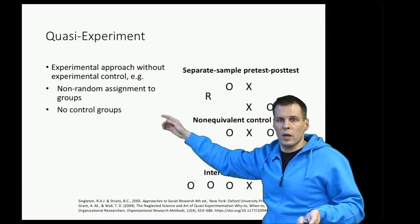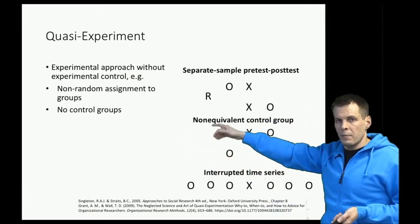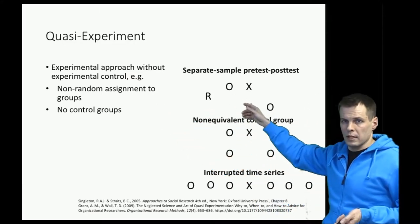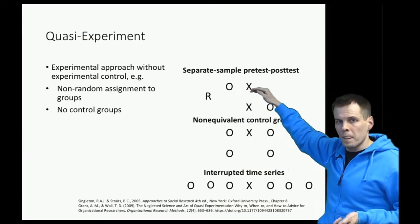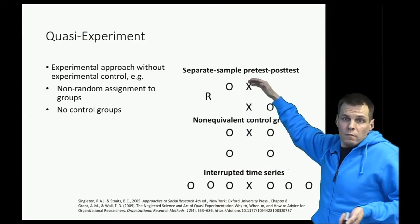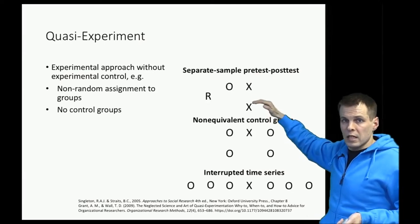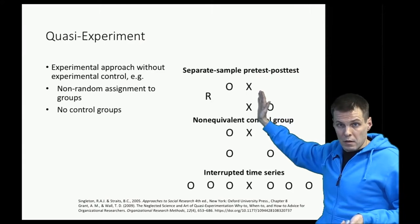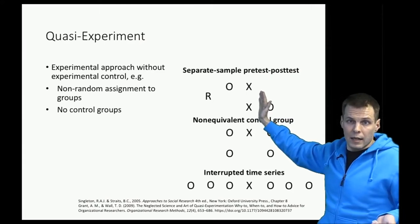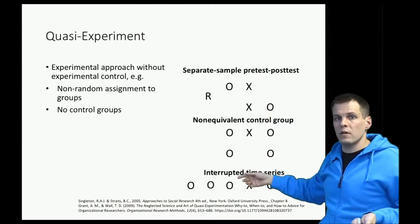For example, we could have a separate sample pretest and posttest. We know that we have a school and the kids will receive a medicine. Everyone gets the medicine on one day, but we can't influence that.